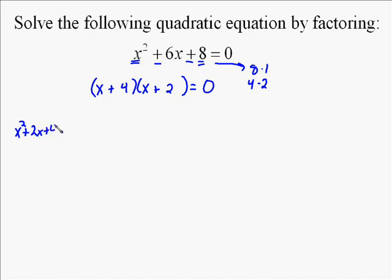We check it. x times x is x squared. x times 2 is 2x. 4 times x is 4x. 4 times 2 is 8. So you end up with x squared plus 6x plus 8. That is exactly what we started with. So our factorization is x plus 4 times x plus 2.